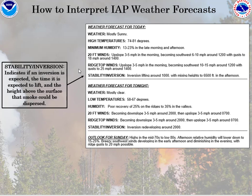Last in today's section we have stability and inversion. This indicates if an inversion is expected, the time it's expected to lift, and the height above the surface that smoke could be dispersed. A fire may be slow moving and not very active when under an inversion, but when an inversion lifts, winds can increase, temperature can increase, and relative humidity can decrease, which could quickly change fire behavior. When a fire is above an inversion, it will typically be more active than a fire below an inversion due to the difference in temperature and relative humidity.